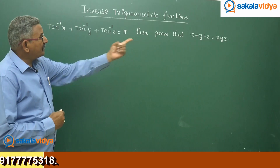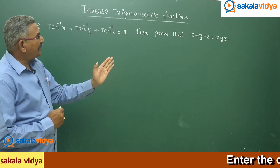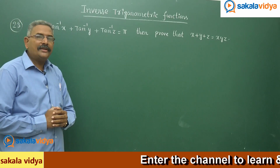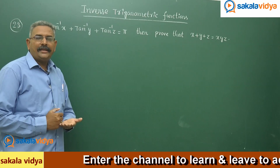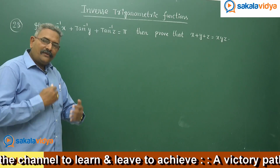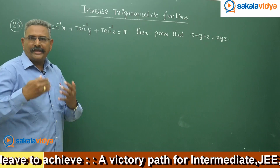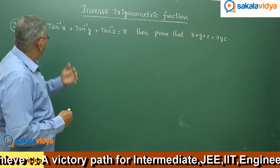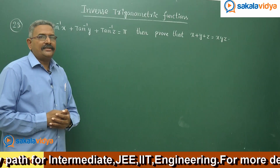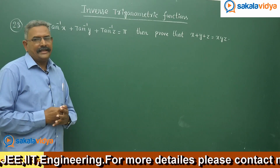What has to be proved is that tan a + tan b + tan c = tan a · tan b · tan c, or equivalently σ tan a = π tan a. It is enough to prove tan a + tan b + tan c = tan a · tan b · tan c, provided a + b + c = 180 degrees. This problem we have already done in compound angles.